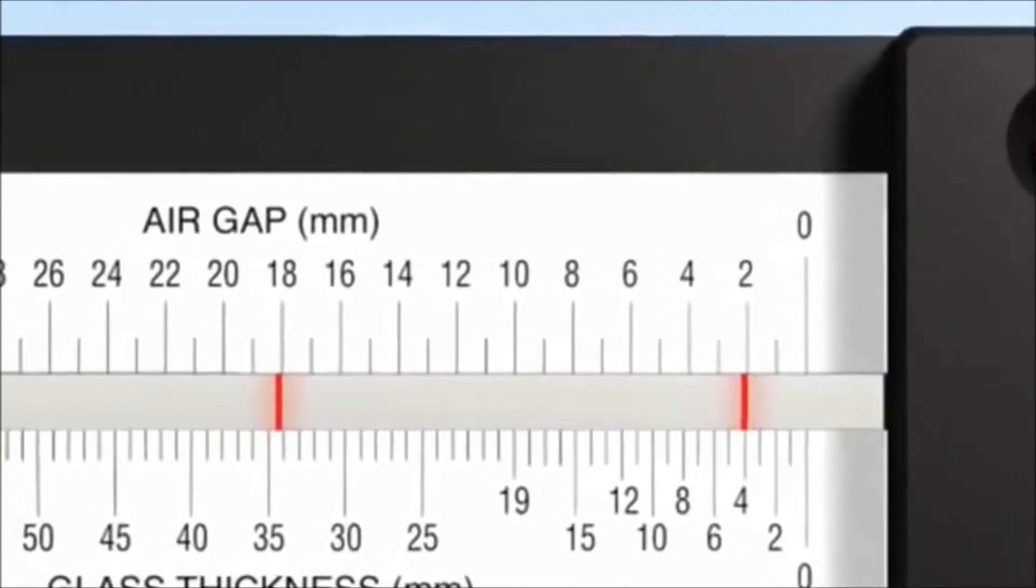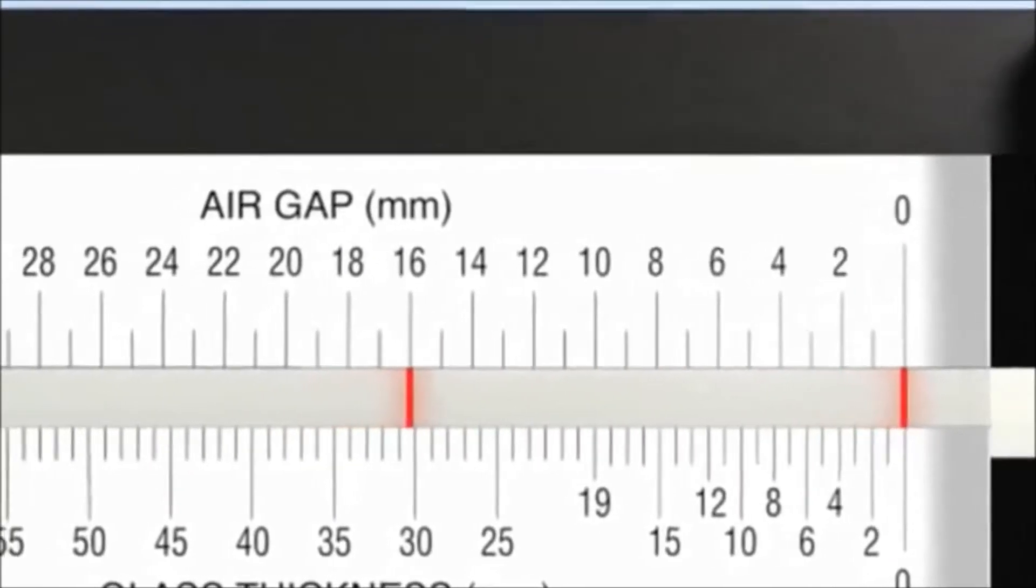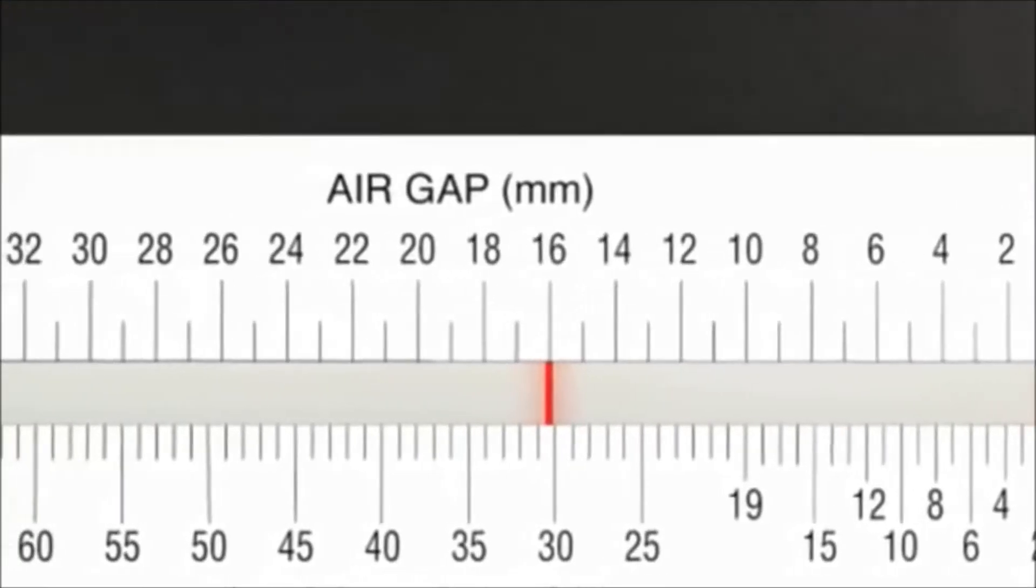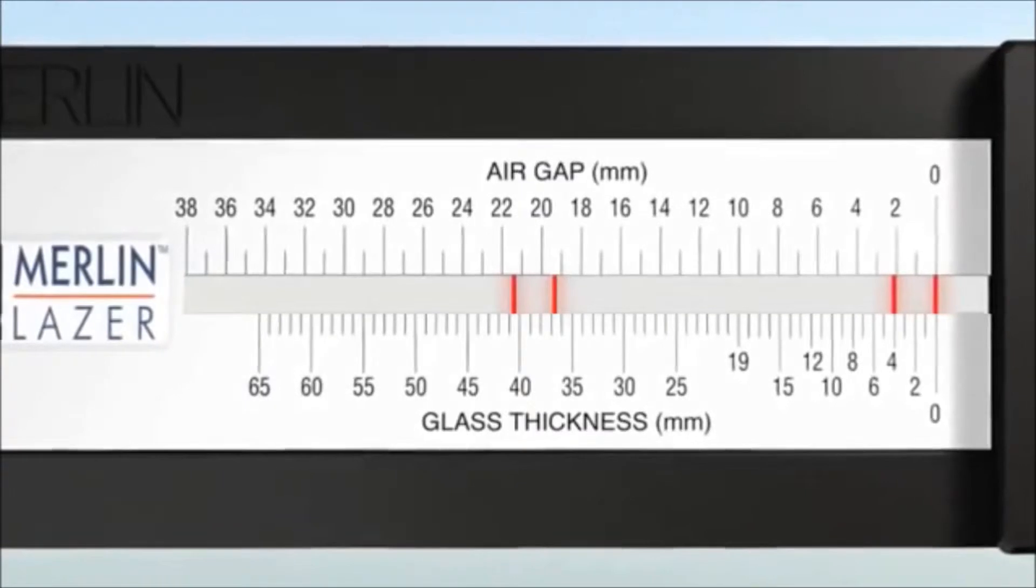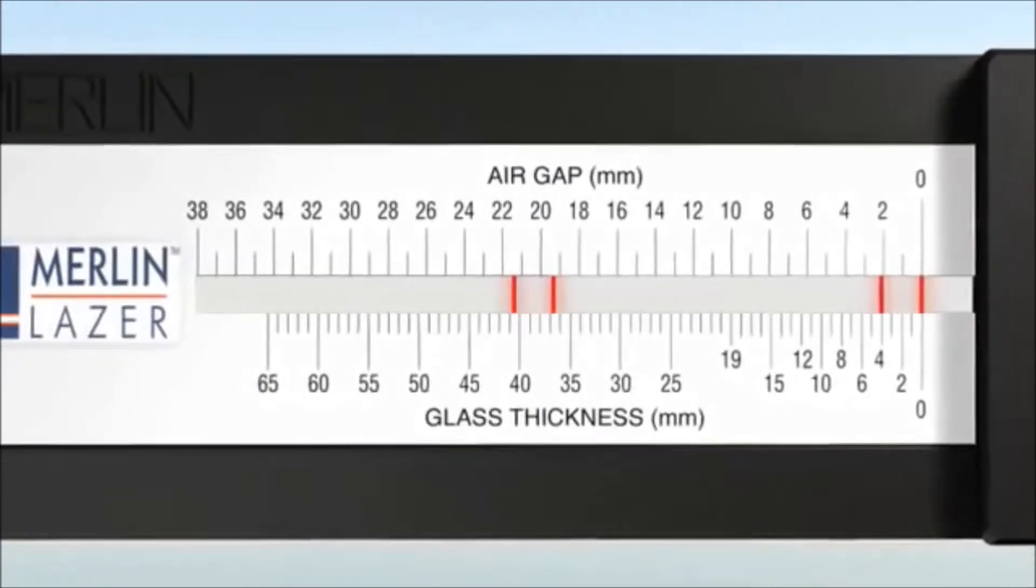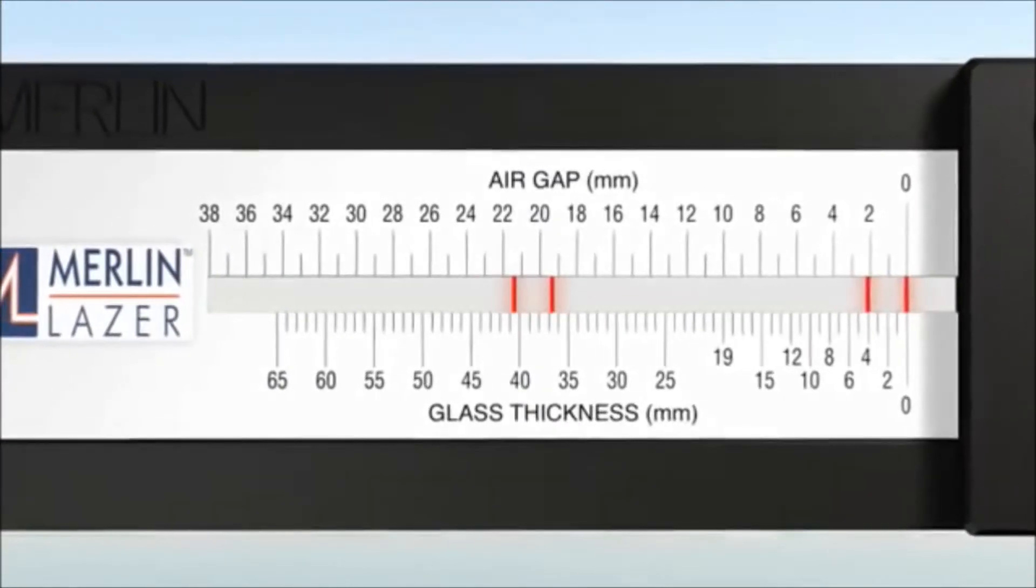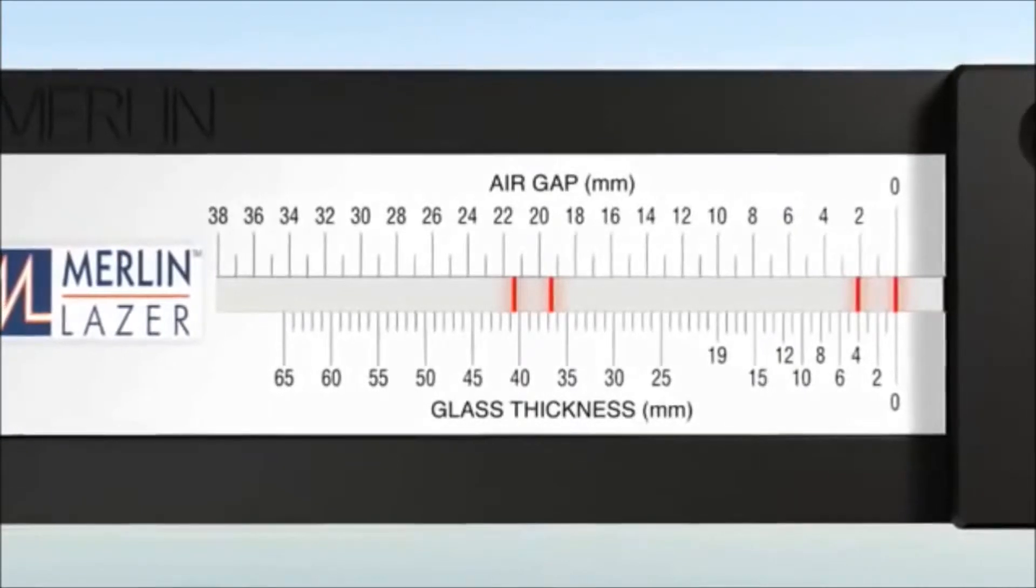The air gap section at the top of the scale is used to measure the width of any airspace in a double or triple glazed unit. When used in conjunction with the glass thickness scale, it will enable the overall thickness of any double glazed or triple glazed unit to be measured quickly and simply with no unit removal necessary.